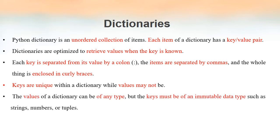The values of a dictionary can be of any data type — there is no restriction. However, the key must be of an immutable data type. Immutable means once we have declared the key, it cannot be changed. So keys inside the dictionary must be either a tuple, numbers, strings, or any other immutable data type.